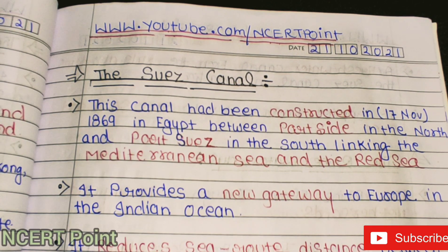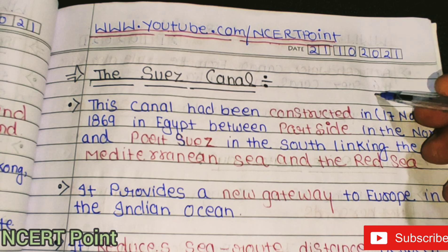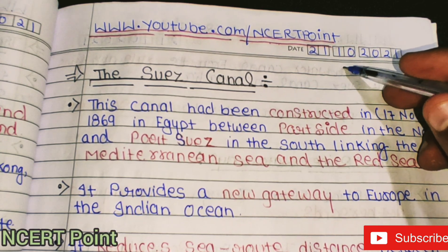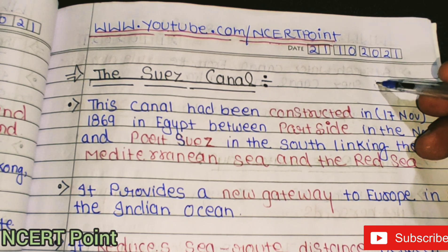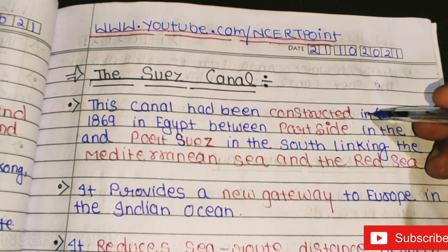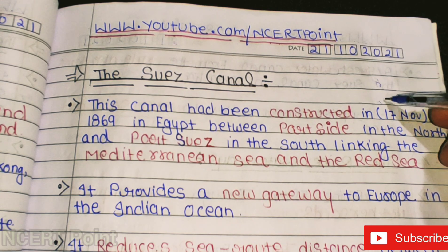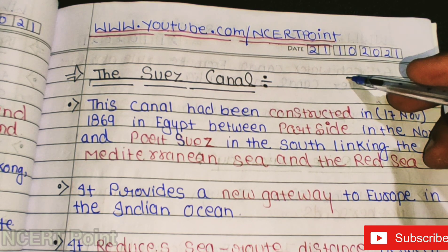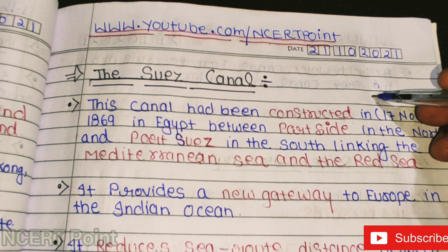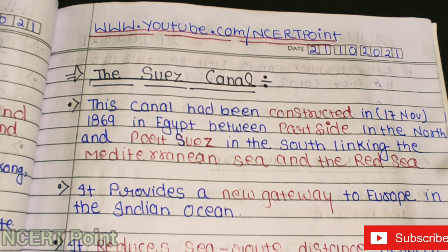The British built the Suez Canal because earlier, to transport goods from India, they had to go all the way around Africa — a journey of around 7,000 km. By creating a direct route, they saved on travel cost, reduced time, and lowered the risk involved in long sea voyages.